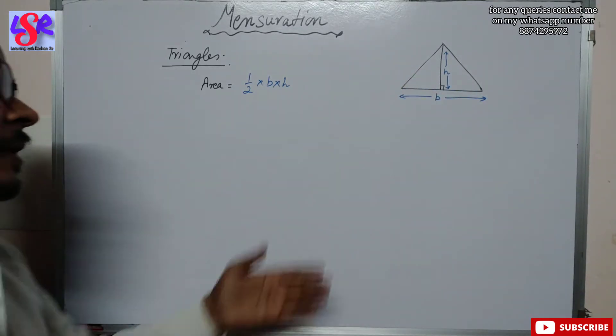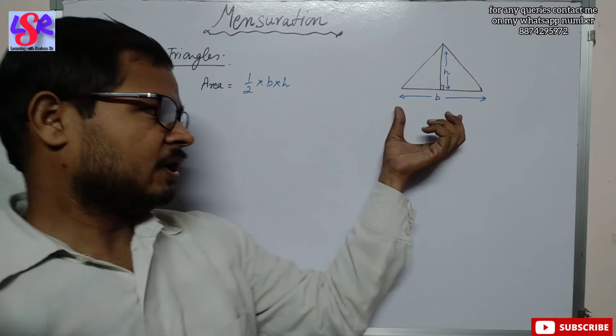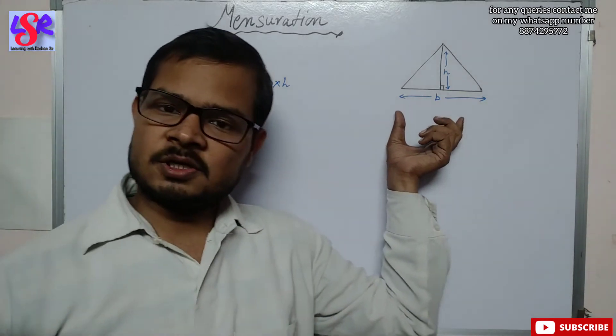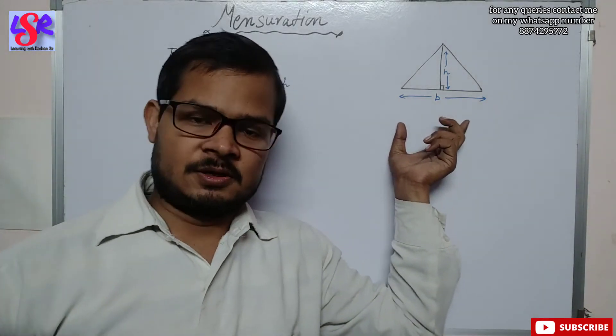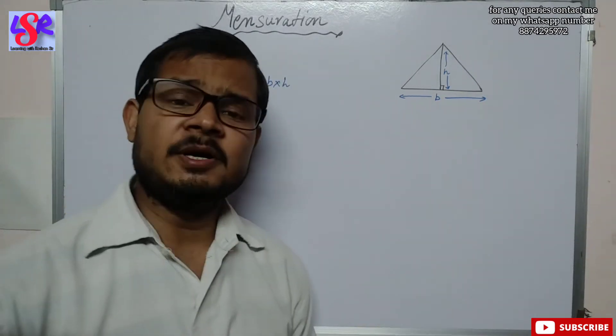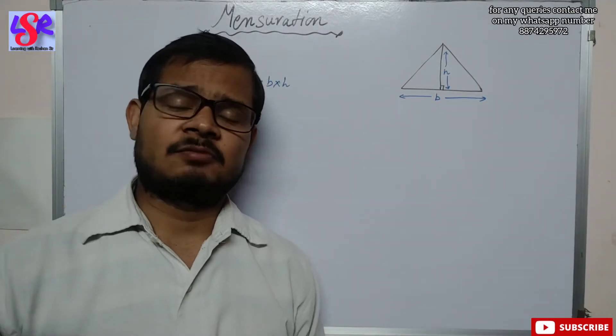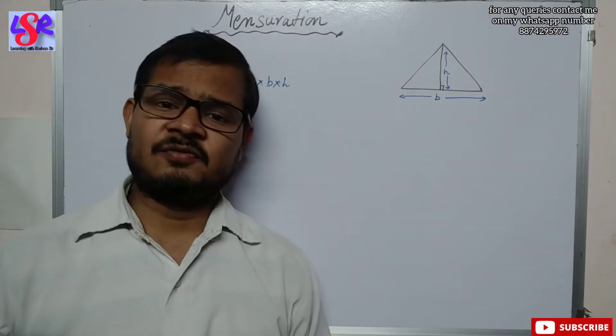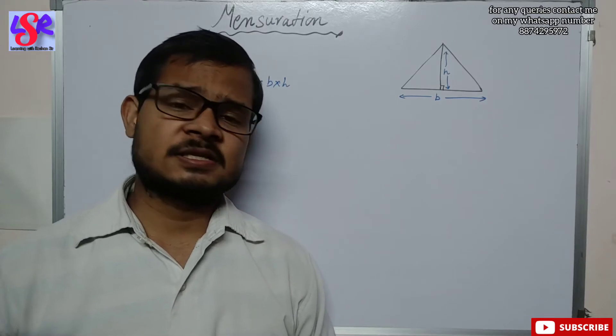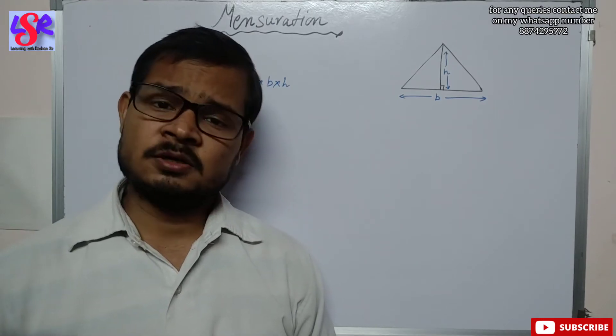You will be getting the same area for the same triangle regardless of which base you choose. The perimeter of a triangle is calculated by the general formula, that is the sum of all the sides.